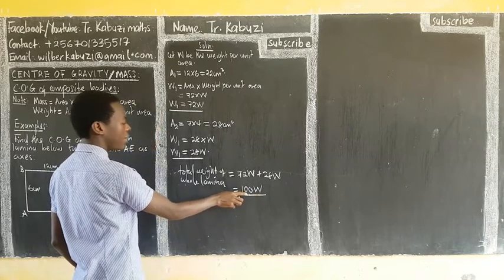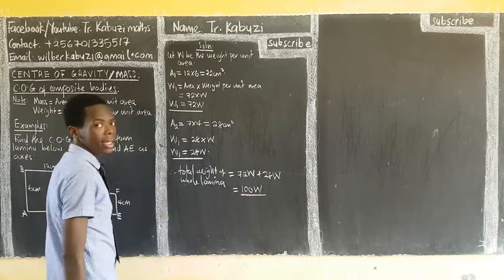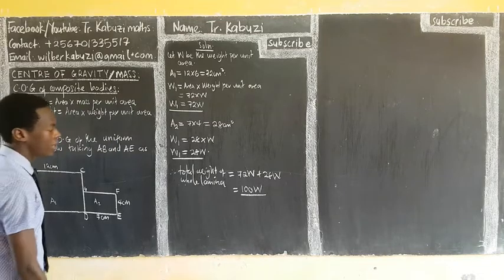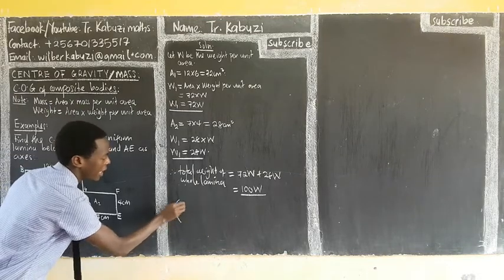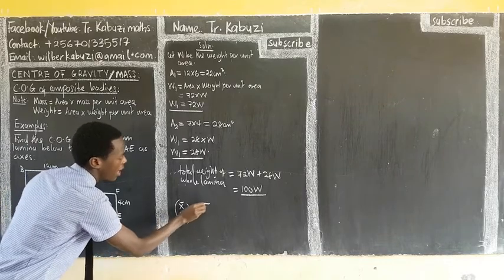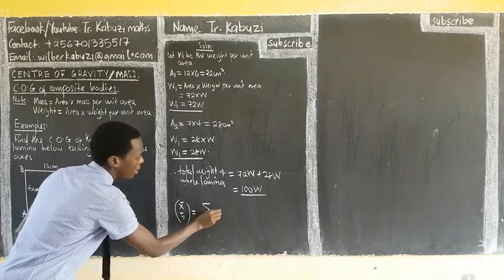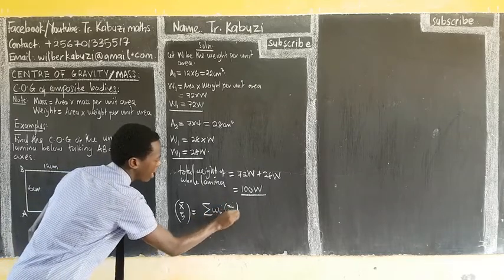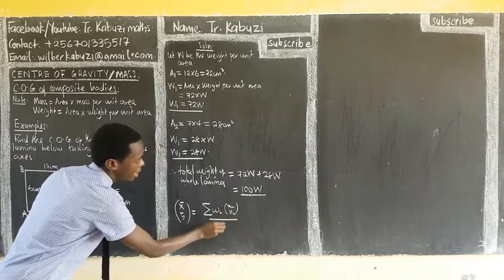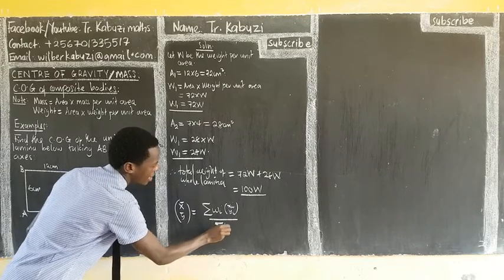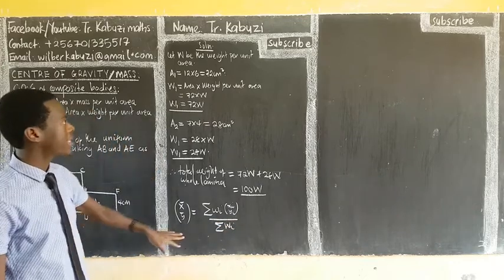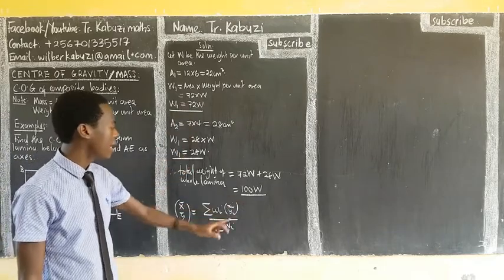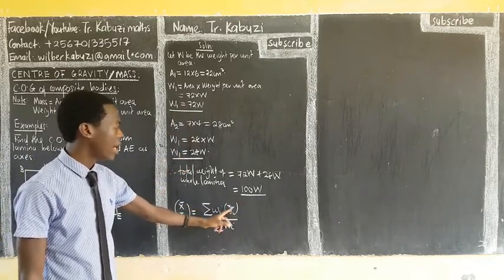The center of gravity is going to act where this total weight acts. To find the center of gravity x̄, ȳ, we use our general formula. We need to know where each of the two individual weights are acting, divided by the sum of those individual weights. So our task is: we have the weights, but we need to know where they are acting.